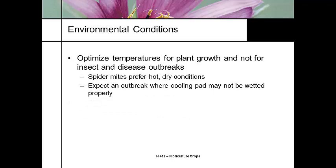Environmental conditions and temperature are related to insect outbreaks. You want to optimize temperatures for plant growth — not for insect and disease outbreaks. Spider mites prefer hot dry conditions, and you might see an outbreak where cooling pads aren't getting wet. I've walked into greenhouses and told managers: you have a plugged orifice on your cooling pad, causing a dry strip across your greenhouse, and that's where you're having your mite outbreak. Keeping climate uniform helps manage these problems.